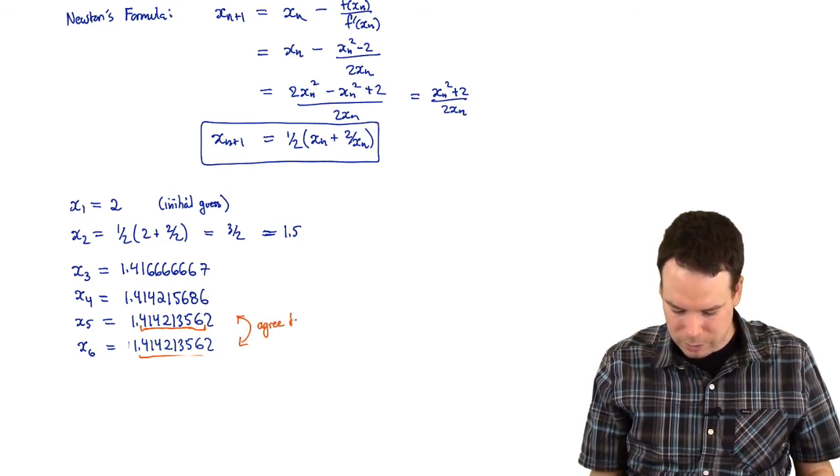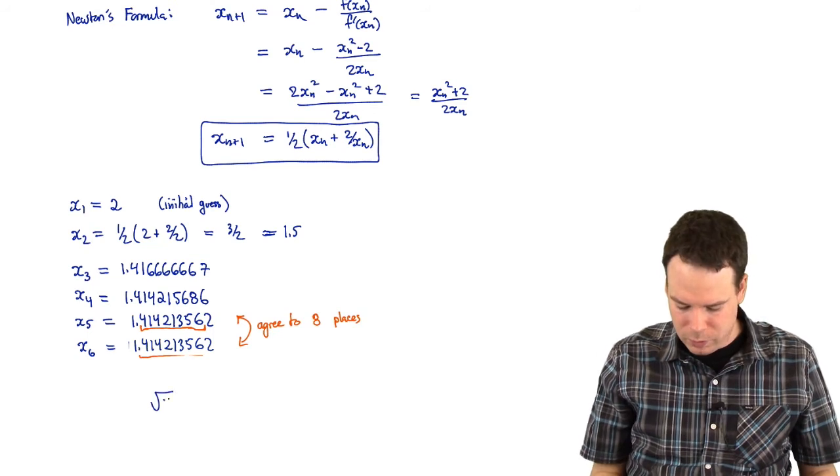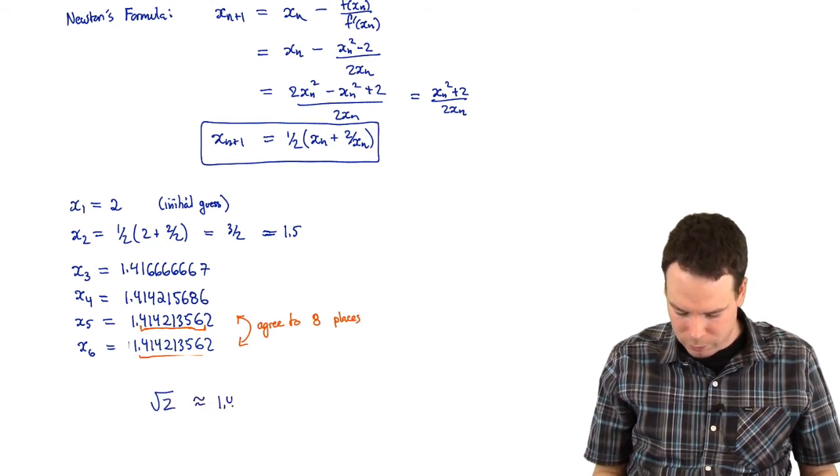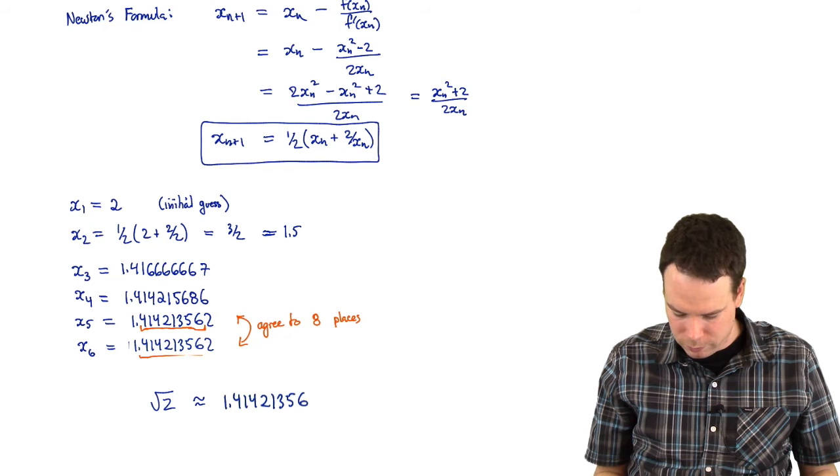So these ones agree to eight decimal places. And so that means we've just found that the square root of 2 is approximately 1.41421356.